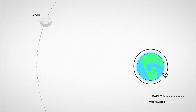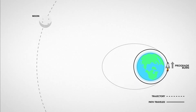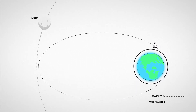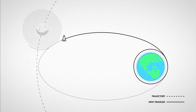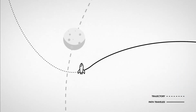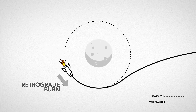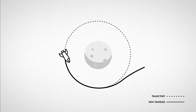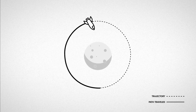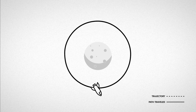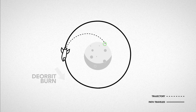To get to the moon, for example, we point forward and fire our engines to expand our orbit until it intersects with the moon's path. Even though the moon's gravity starts pulling us in, we still need to flip around and burn our engines in reverse to slow down and get into orbit. At that point, we can pick a spot to land, burn engines against our trajectory, and come down to the surface.